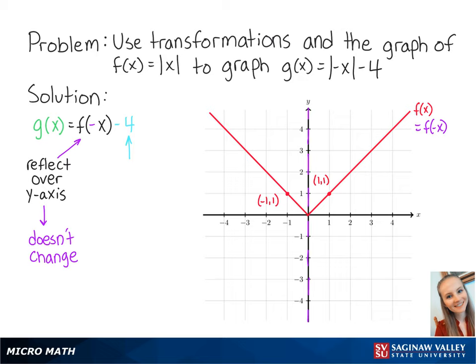Subtracting 4 from the function means that we will shift the graph down by 4 units. So our new points are at (1, −3) and (−1, −3).